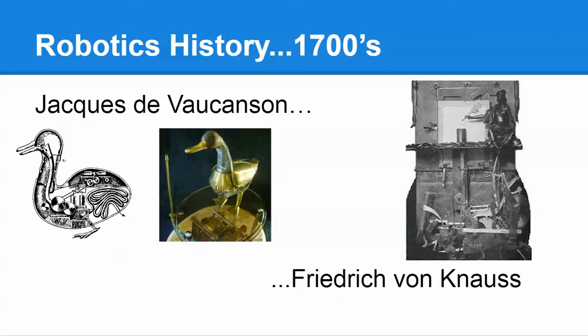Moving forward, Jacques de Vaucanson created the clockwork automaton, or self-operated machines. His biggest piece was the digesting duck — you can see an illustration and reconstruction on screen. His digesting duck could walk, quack, eat, and he even allowed it to expel waste, even though that waste was preloaded and the duck did not actually digest the food it ate. Onlookers were absolutely amazed and thought he had created life — kind of a Frankenstein-type experience.